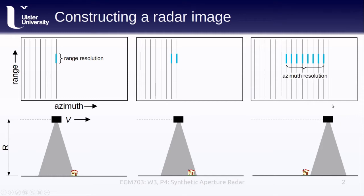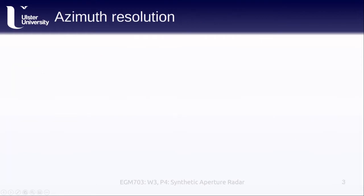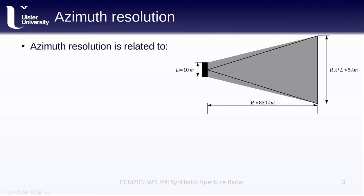And as you might have guessed, this is effectively the beam width of our sensor on the ground. How do we calculate the beam width? It turns out that the beam width, or the azimuth resolution, is related to the length of our antenna, L, and the distance to our target, R. It also depends on the wavelength of the signal being sent out.